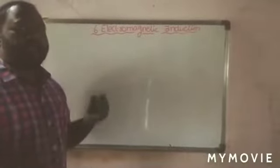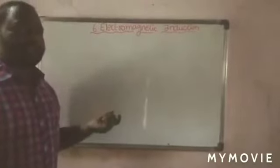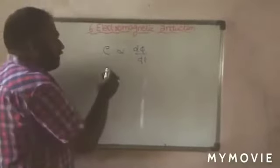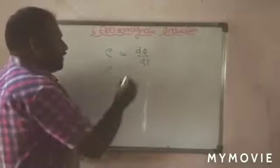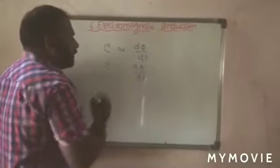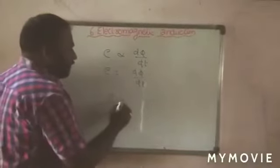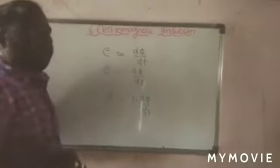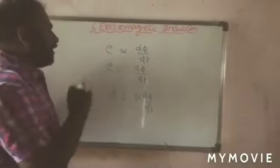In the last session, we discussed Faraday's laws and its experiments. We defined two laws. Faraday's first law states that whenever the magnetic flux linking with a circuit changes, an EMF is induced. Faraday's second law states that the induced EMF E is directly proportional to the rate of change of flux. For a single-turn coil, E = dφ/dt; for N turns, E = N × dφ/dt. This gives the magnitude of induced EMF when a coil is placed in a magnetic field.